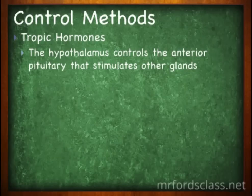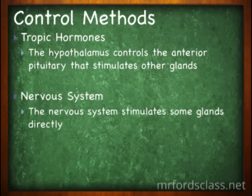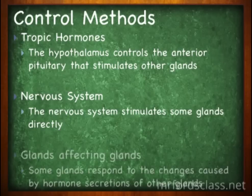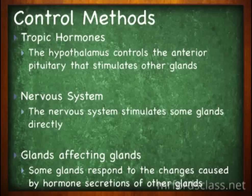We have other methods of control. For example, we have tropic hormones. Tropic hormones interact with other glands. They tell other glands to do something. The hypothalamus controls the anterior pituitary, that stimulates other glands. So the tropic hormones make other glands do something. The nervous system also controls the endocrine system. The nervous system will stimulate some glands directly. And we also have some glands affecting other glands. Some glands respond to changes caused by hormone secretions of those other glands.